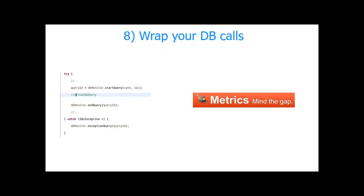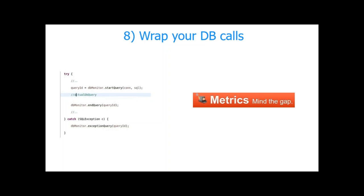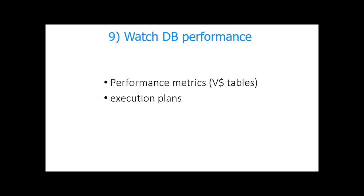The previous point was about looking at the database from the application side; this one is about looking at the application from the database side. Many databases have performance metrics — for Oracle there are V$ tables where you can find performance data. You can also look at execution plans to see whether it would be a good idea to introduce additional indexing.